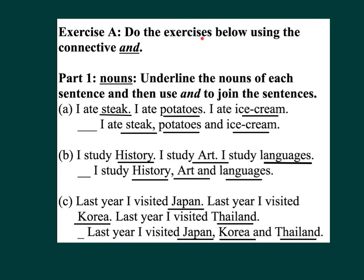Exercise A: Do the exercise below using the connective AND. Part one — Nouns: Underline the nouns of each sentence and then use AND to join the sentences. A: 'I ate steak, potatoes, and ice cream.' B: 'I studied history, art, and languages.' C: 'Last year I visited Japan, Korea, and Thailand.'